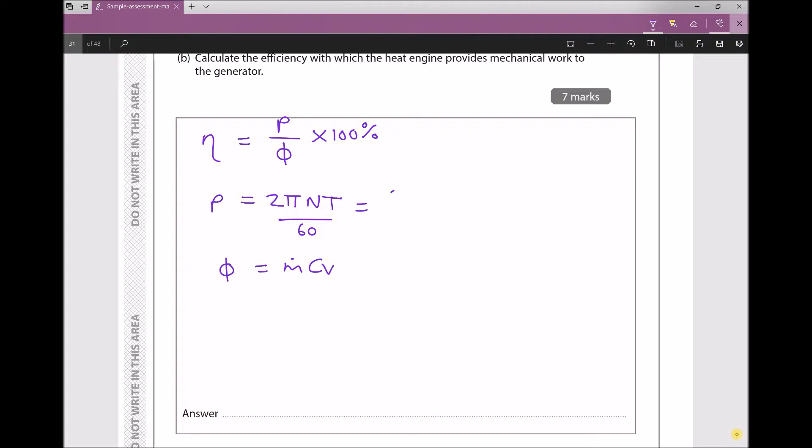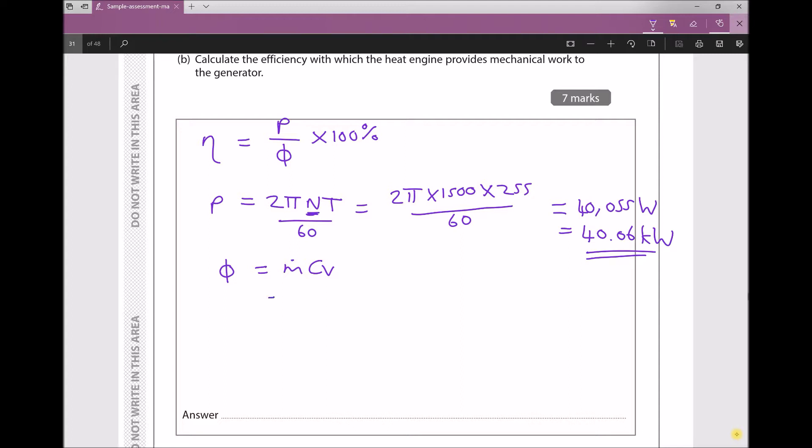So now we can do our calculations. We have 2π times 1500 RPM times 255 divided by 60. It's probably worth noting when we use this formula, N needs to be expressed in revolutions per minute, so we already have the correct units for that. Now when we run that through our calculators, we get a power output equal to 40,055 watts. Power is measured in watts. I'm going to convert that to kilowatts. So 40.06 kilowatts to 2 decimal places.